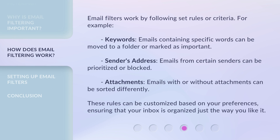Email filters work by following set rules or criteria. For example: Keywords — emails containing specific words can be moved to a folder or marked as important. Sender's address — emails from certain senders can be prioritized or blocked. Attachments — emails with or without attachments can be sorted differently. These rules can be customized based on your preferences, ensuring that your inbox is organized just the way you like it.